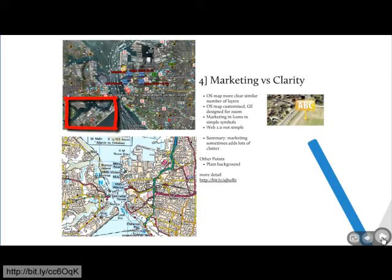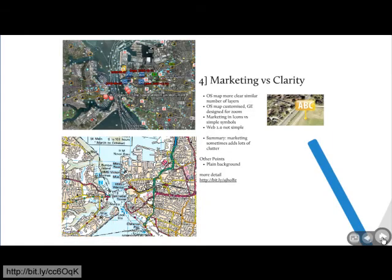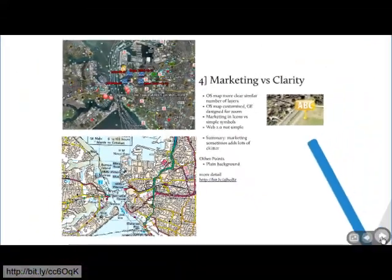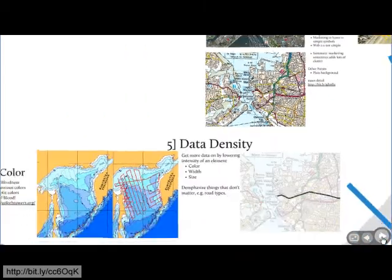Presenting things very plainly, as you'll see in the OS map at the bottom, works a lot better. The basic point is that there's a trade-off between marketing and clarity. You want a clear map, and if you use too many marketing symbols you reduce the clarity — you've got to balance both in whatever map you're designing.